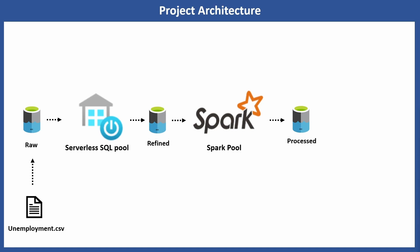We will also see some terminologies like bronze, silver, and gold for the raw, refined, and processed containers respectively. You can use either set of terminologies — for this course I named them raw, refined, and processed containers. The last component would be the dedicated SQL pool, where we will store the data that has been completely cleaned in the processed container.